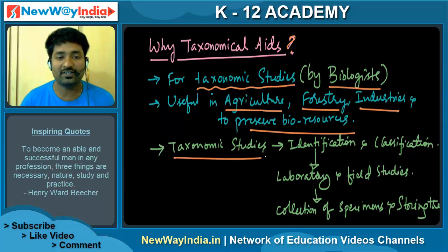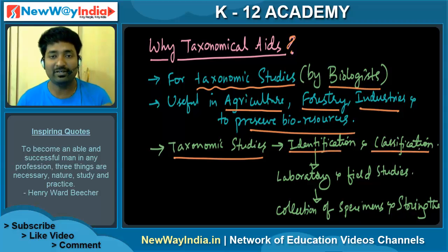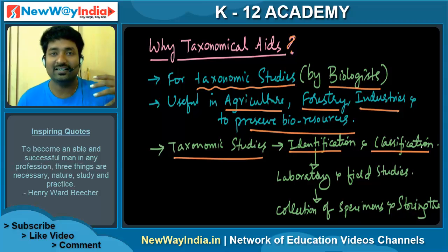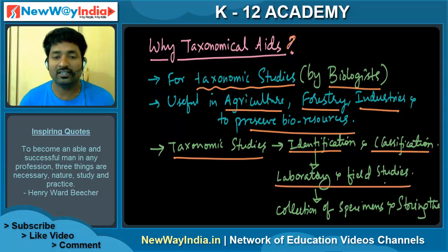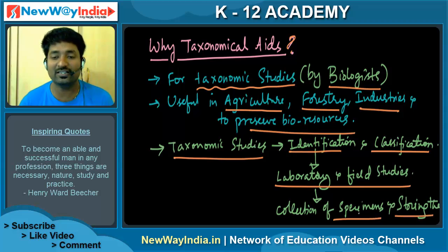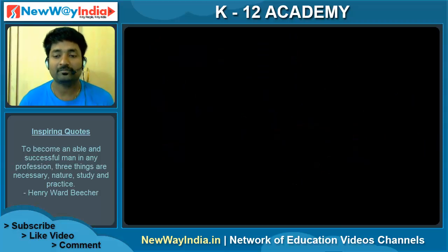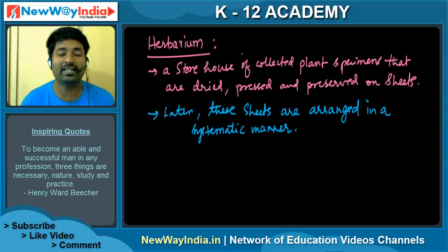Taxonomic studies include identification and classification, as mentioned in the previous video on taxonomic categories. For identification, you need to keep specimens in the laboratory for field studies, so you need to collect the specimens and store them in a proper place. That is what, for example, a herbarium is.